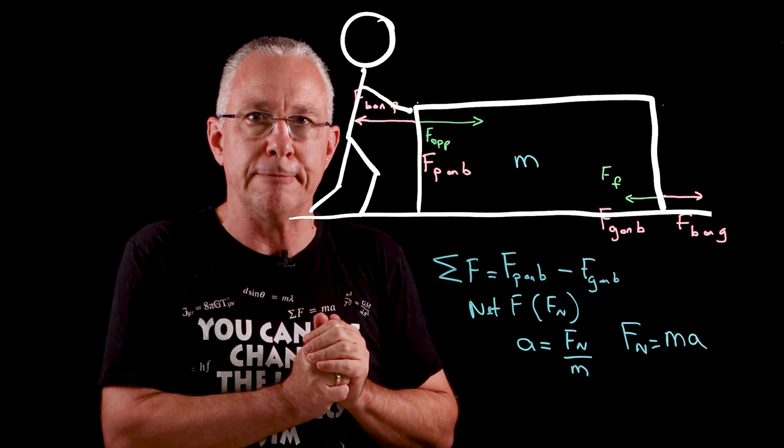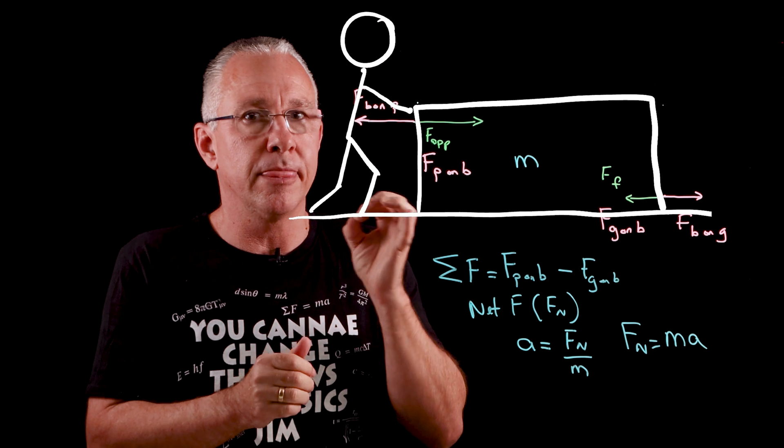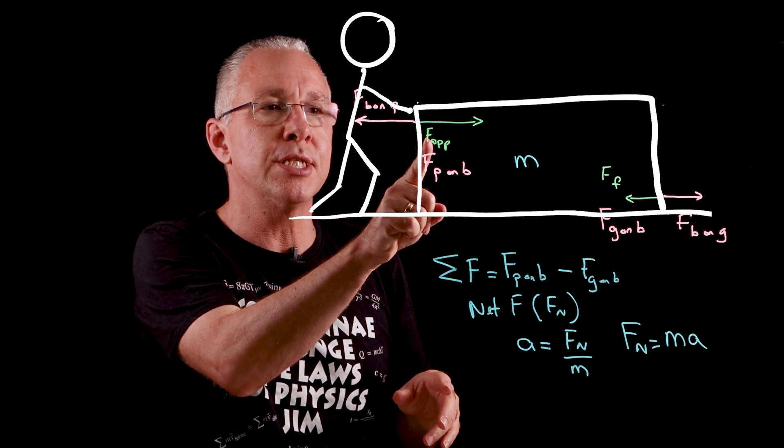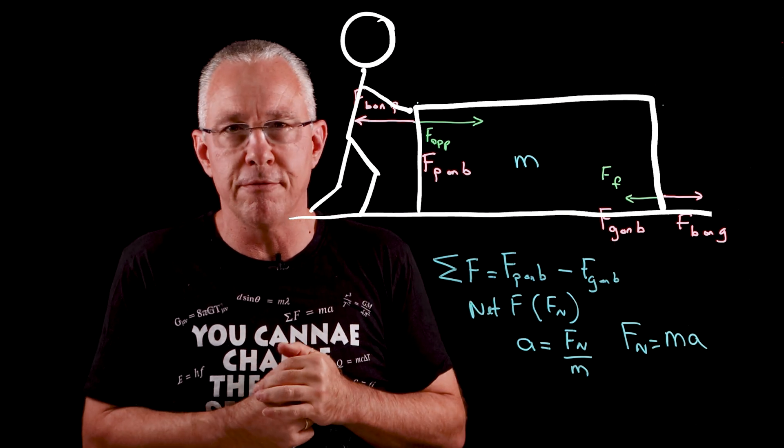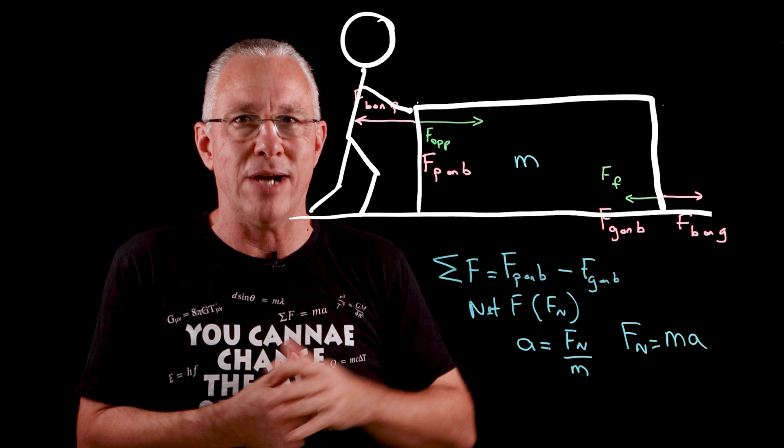It's not speeding up, it's not slowing down. It could also mean that the box isn't moving at all, the velocity is zero. Again in both situations the force that's applied is equal to the force of friction. In other words the force of the person on the box equals the force of the ground on the box.